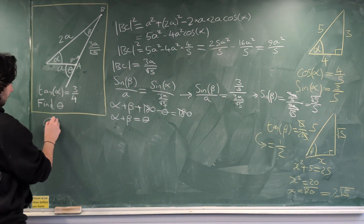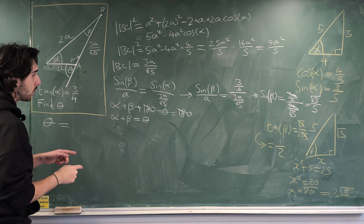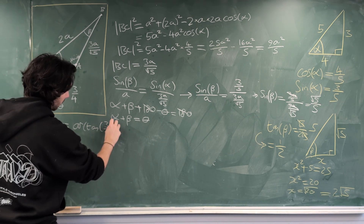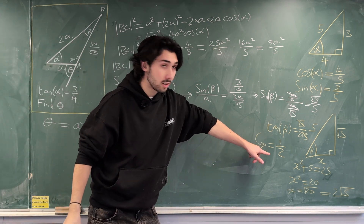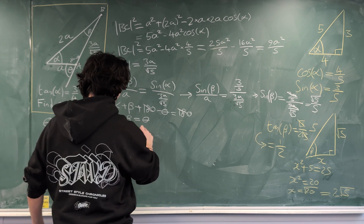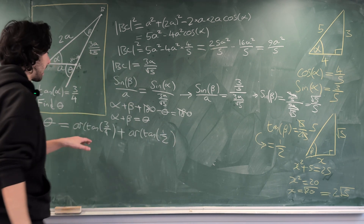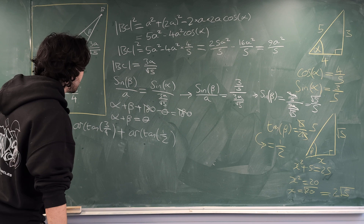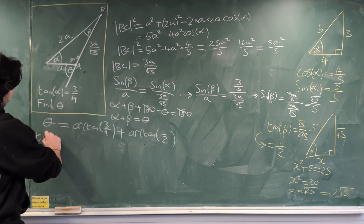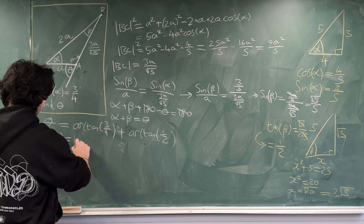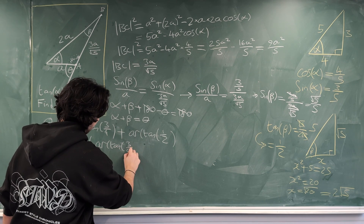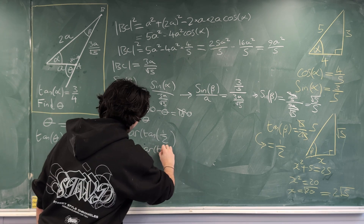So theta = alpha + beta = arctan(3/4) + arctan(1/2). This is a bit better since both are arctangents. Taking tan of both sides: tan(theta) = tan(arctan(3/4) + arctan(1/2)).